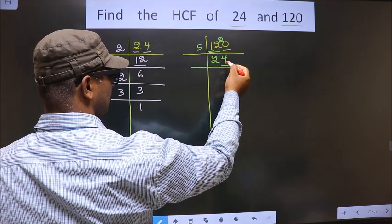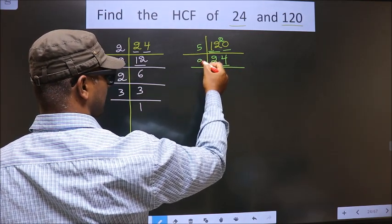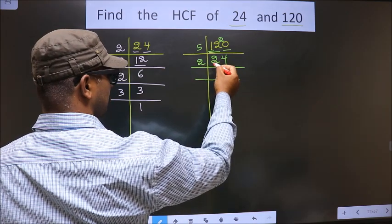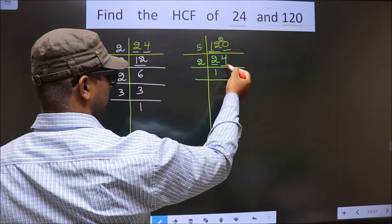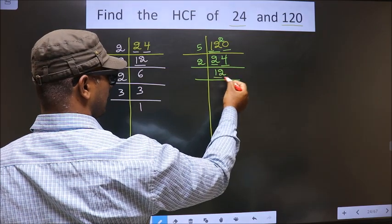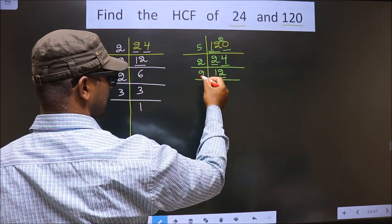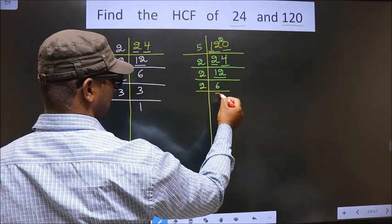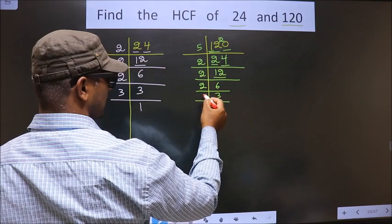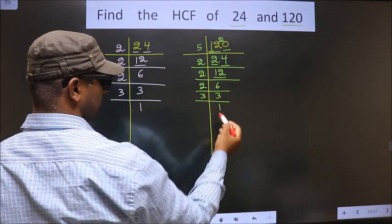Now for this number, last digit is 4, even, so we take 2 here. First number is 2. When do we get 2 in the 2 table? 2 times 1 is 2. Next number is 4 which is 2 times 2 is 4. Now here we have 12. 12 is nothing but 2 times 6 is 12. 6 is 2 times 3 is 6. Now 3 is a prime number, so we take 3 times 1 is 3.